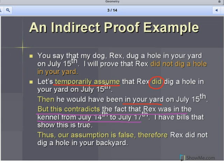And now, the last step, I say, well, we've contradicted this temporary assumption right up here. So, thus, our assumption is false. And, therefore, Rex did not dig a hole in your backyard. So, I went indirectly and proved what I wanted to prove in the first place. So, that's a little example.